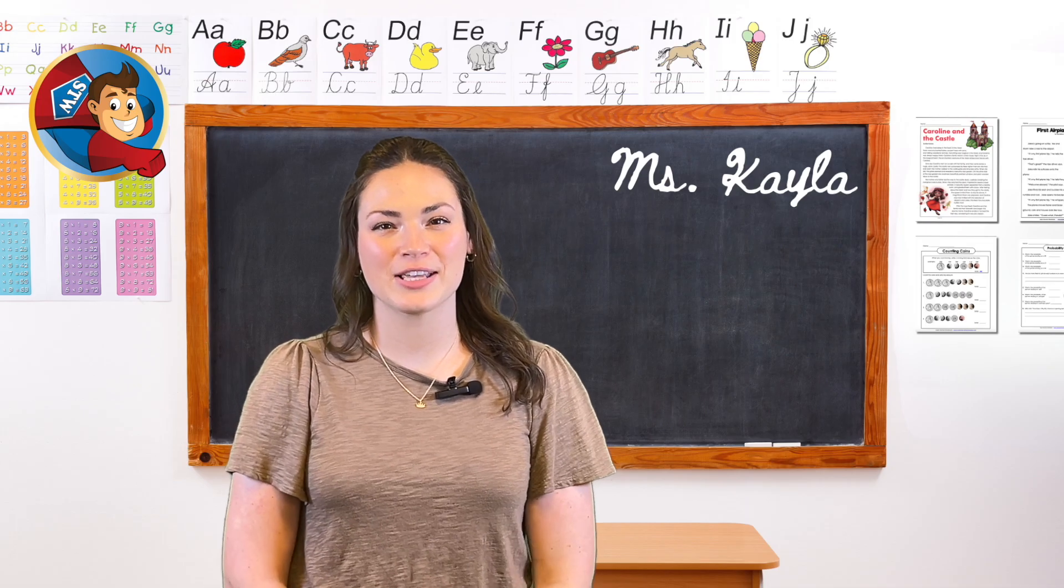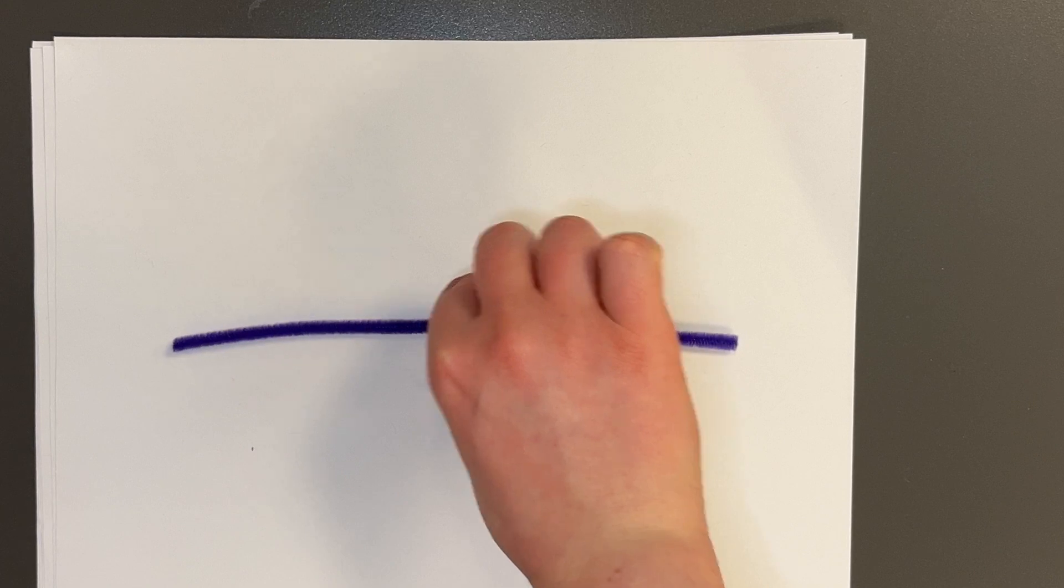First we're going to use our pipe cleaners as a number line to explore fractions. Lay out one of your pipe cleaners horizontally on the whiteboard. This will be our number line.